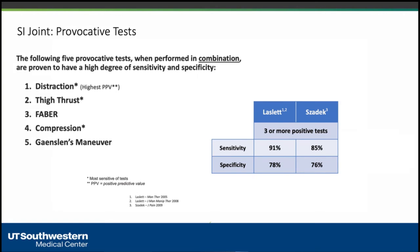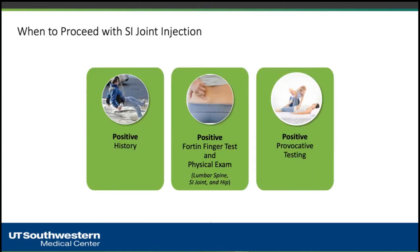The sensitivity and specificity are very high when you have three or more positive tests. So if a patient has a positive history, a positive Fortin finger test, and three out of five provocative tests positive — what is the next step?